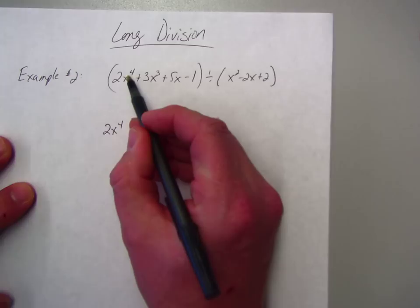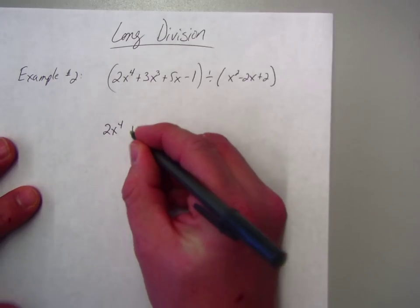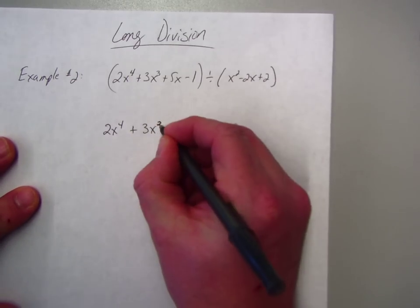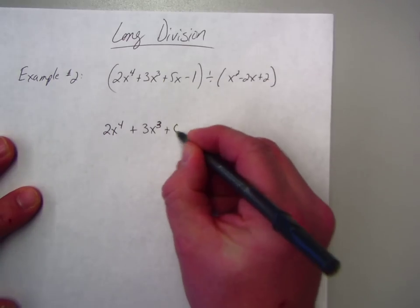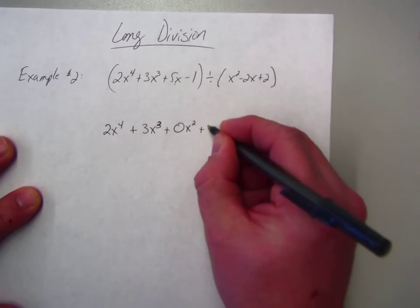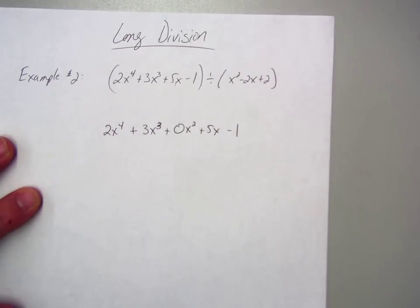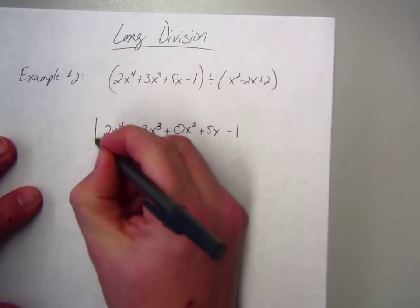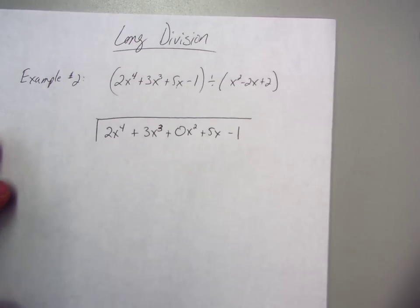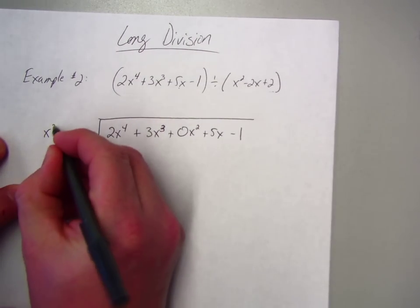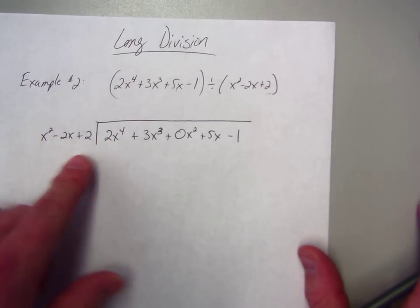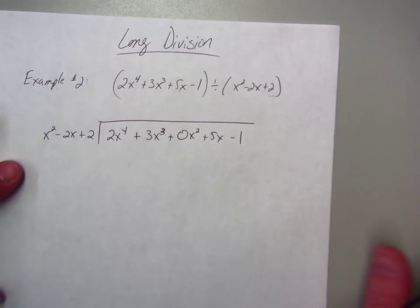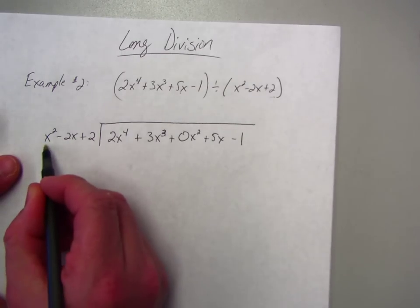It's already in standard form. So, you've got 2x to the 4th. So, after 4, it would be 3. Then after 3 is 2, but there's no quadratic. There's no variable with an exponent of 2. So, we've got to put that in there. Then the linear, and then the constant. Put the divide symbol. Now, this goes in the front. x squared minus 2x plus 2. Now, I'm dividing by 3 terms, which is nice, because it will make this process go a lot quicker.